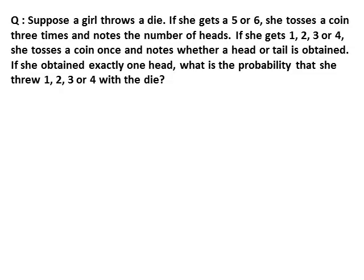First question: suppose a girl throws a die. If she gets a 5 or 6, she tosses a coin three times and notes the number of heads. If she gets 1, 2, 3 or 4, she tosses a coin once and notes whether a head or tail is obtained. If she obtained exactly 1 head, what is the probability that she threw 1, 2, 3 or 4 with the die?